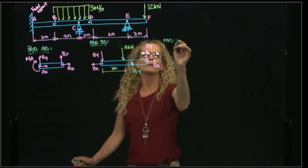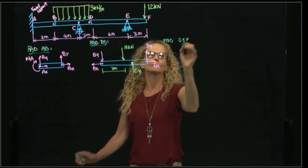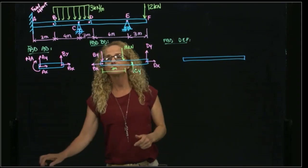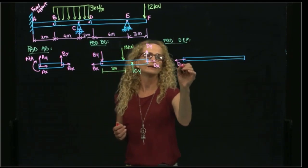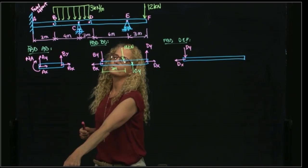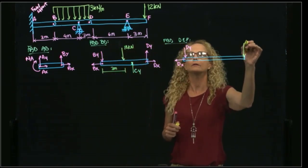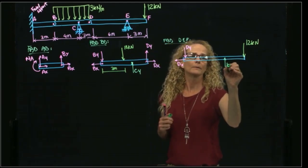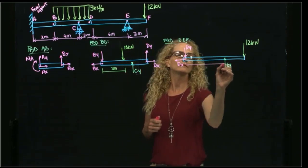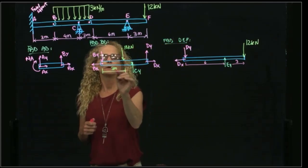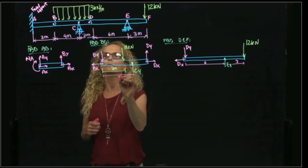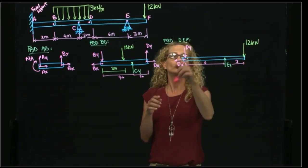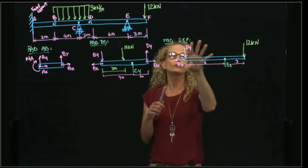Then we have the free body diagram of our last element, DEF. By action and reaction, we will have exactly the same forces as at D but in opposite direction. At E we have an external reaction because there is a roller there. The dimensions are: 6 meters, then 3 meters, then 4 meters, and 2 meters. This is the only free body diagram with only 3 unknowns, so we must start with this one.